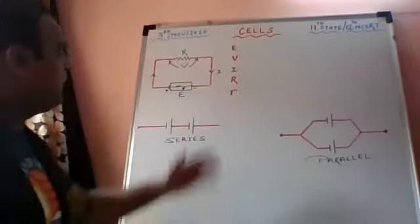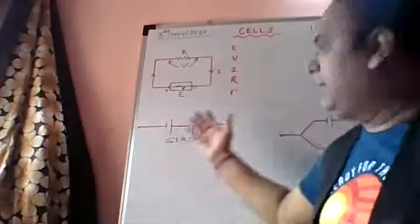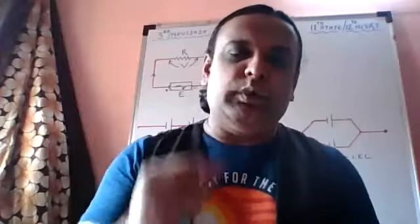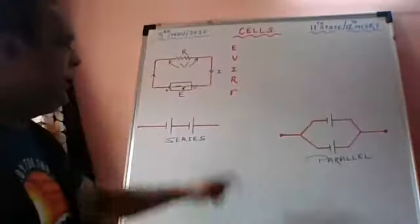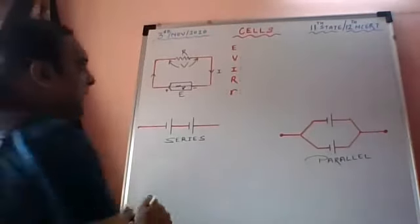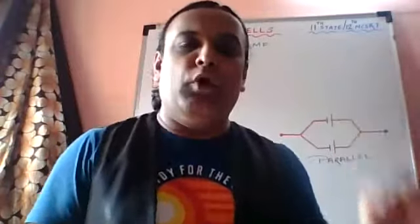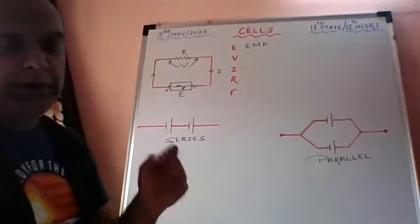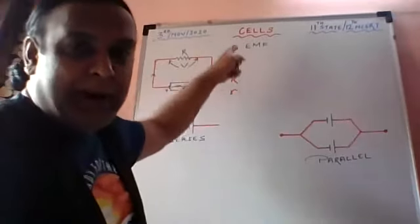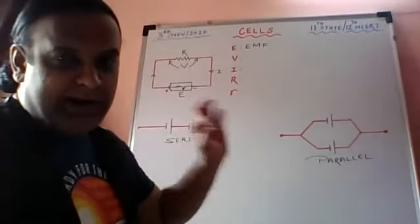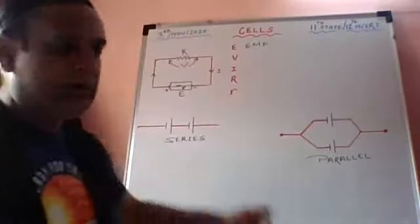Okay, so let us begin. This is Ohm's law applied to an electric circuit. Capital E stands for EMF — electromotive force. EMF is the amount of work done, or the energy spent, in moving a charge once around the complete circuit. Charge ko aap poore circuit mein ghumao, uske liye jo energy chahiye, that is your EMF.